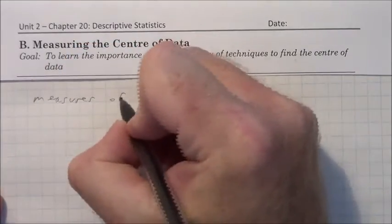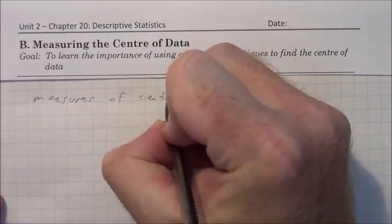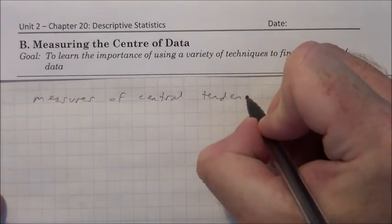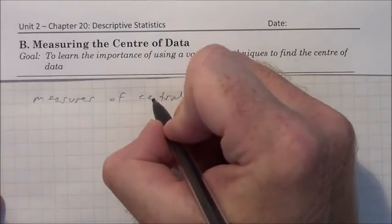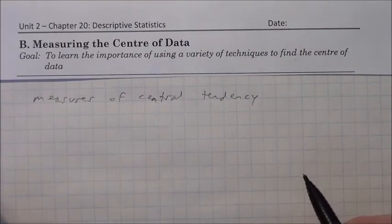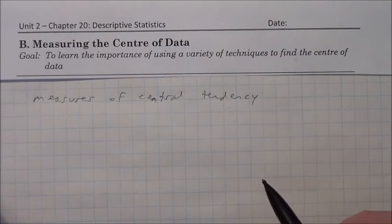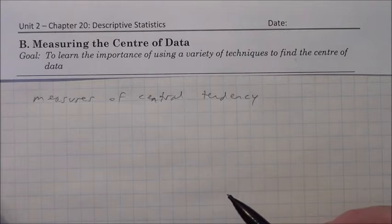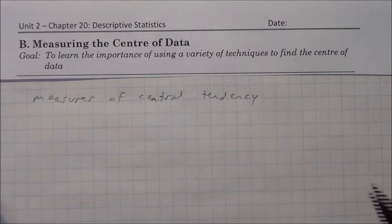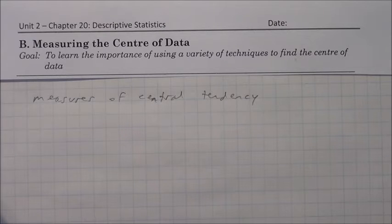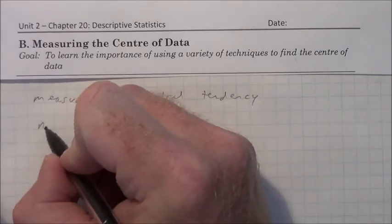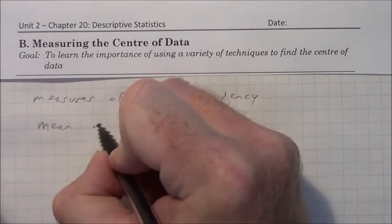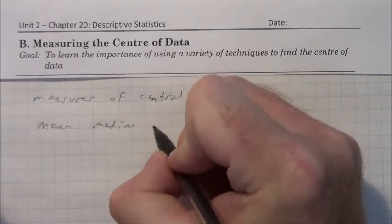What that means is we're trying to find, basically, the center of the data that best represents the entire group of the data. There are a few ways of calculating it. One would be by looking at the median, another one is the mean, and the other one is the mode. We usually hear it as mean, median, and mode.